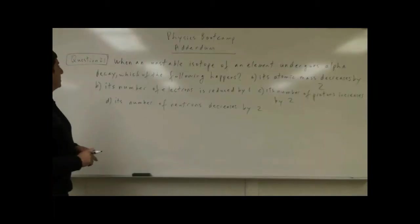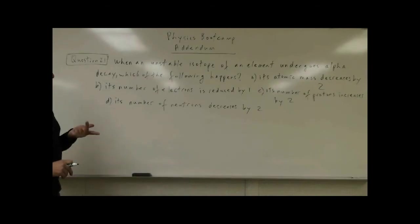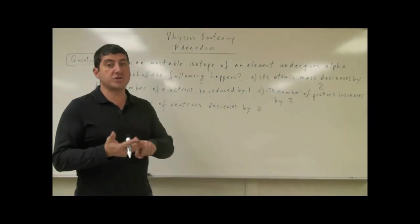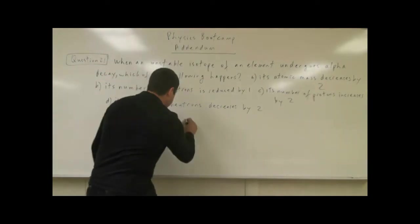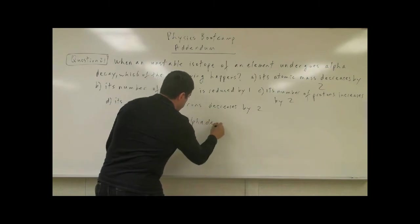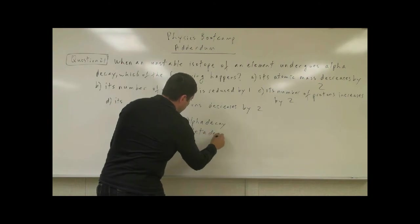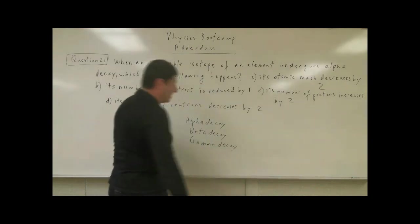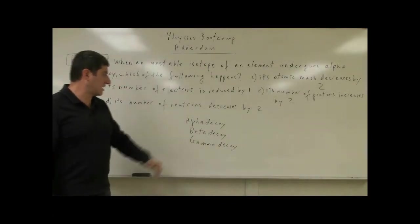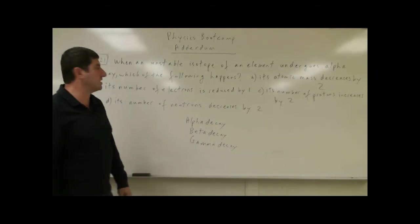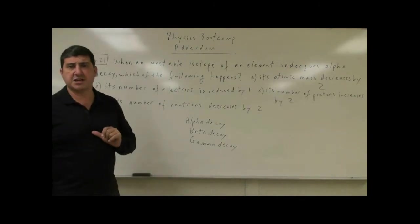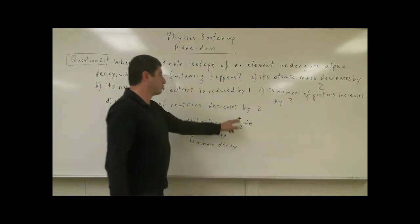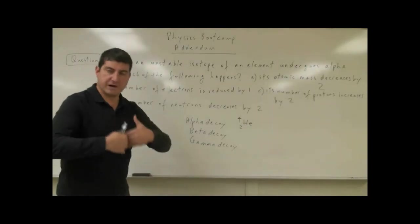For question number 21 on the addendum, it says: when an unstable isotope of an element undergoes alpha decay, which of the following happens? This topic concerns nuclear physics and radioactivity. There are three major kinds of radioactive decay: alpha decay, beta decay, and gamma decay, named after the first three letters of the Greek alphabet. Alpha decay is the emission of the nucleus of a helium atom — He-2-4 — two protons and two neutrons are emitted from the unstable isotope.